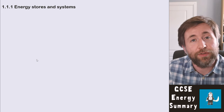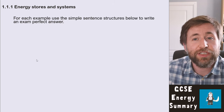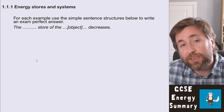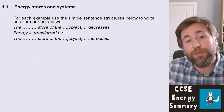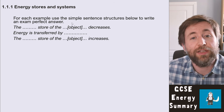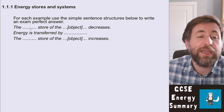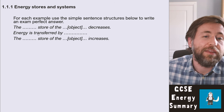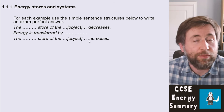You need to get really good at identifying those stores and transfers. Whenever you recognize it's a stores-and-transfers question, use a simple sentence structure: 'The [something] store of the [object] decreases, the energy is transferred by [method], and the [something] store of the [object] increases.' The first store is one of those eight stores, the transfer is one of the four options, and the final store is whichever type and object applies.